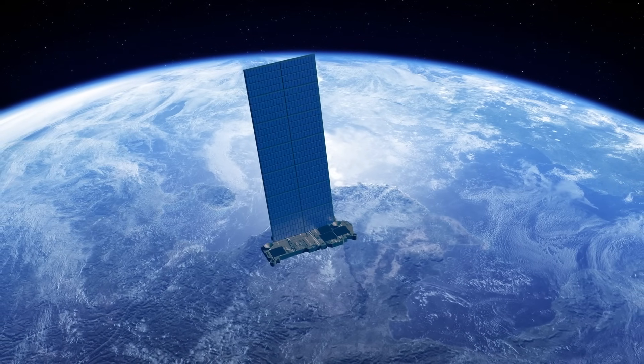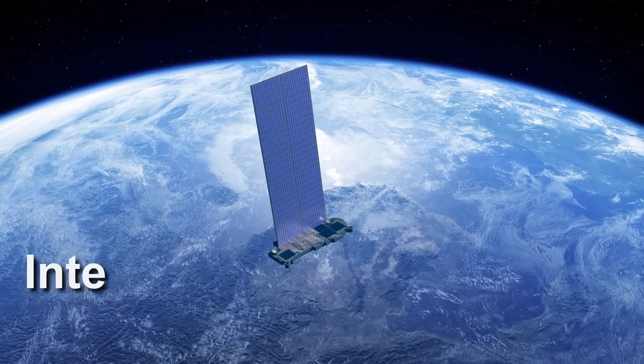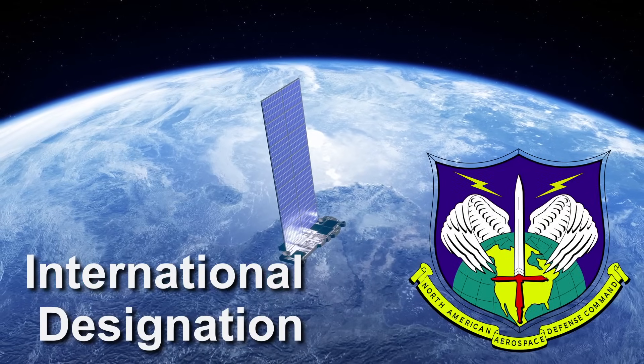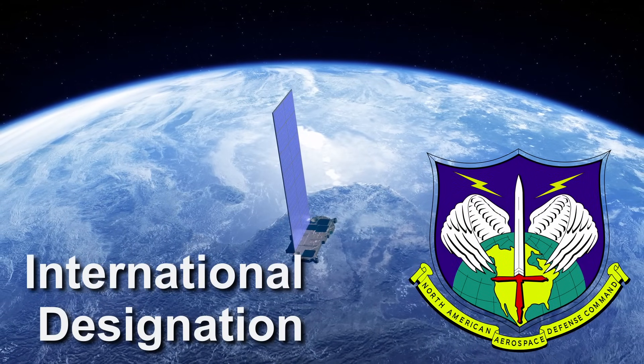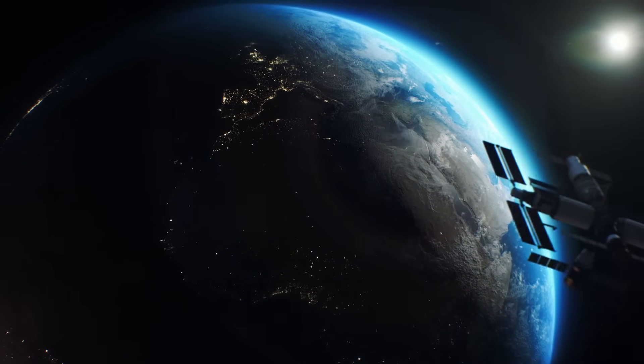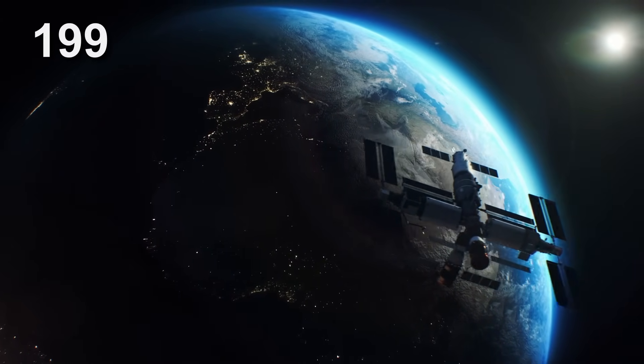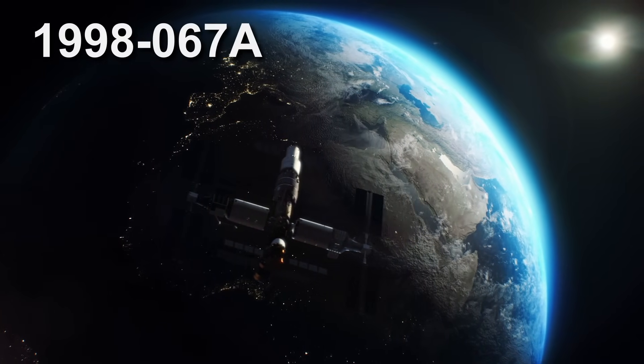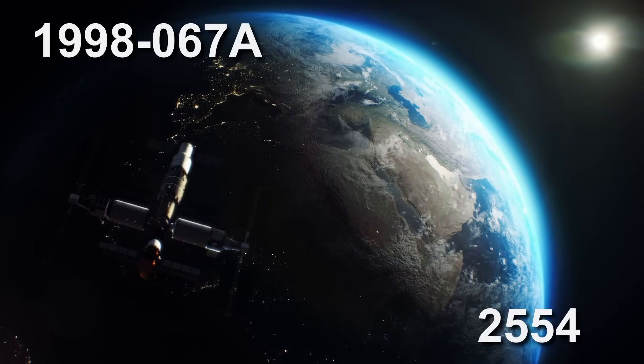Using open source intelligence, we can scan through public datasets to retrieve information about a satellite. Each artificial satellite in orbit is given two things: an international designation and a NORAD ID, which is a catalog number for the satellite. For example, the international designation of the International Space Station is 1998-067a, and the NORAD ID is 25544.